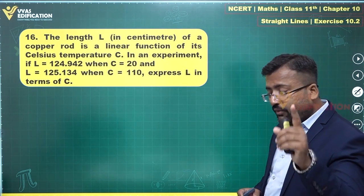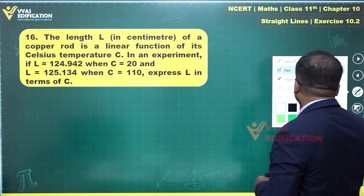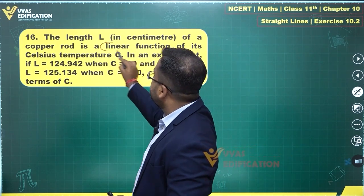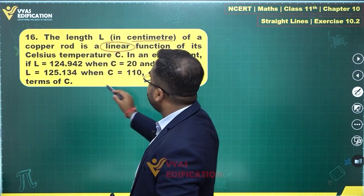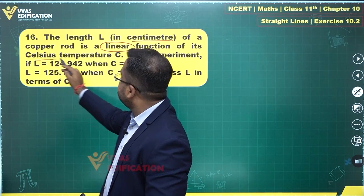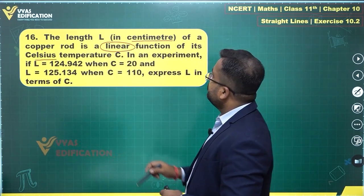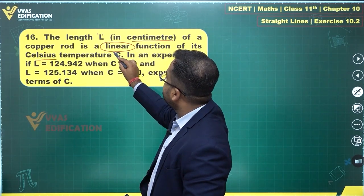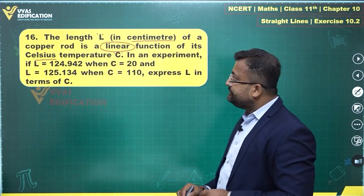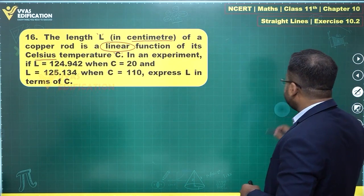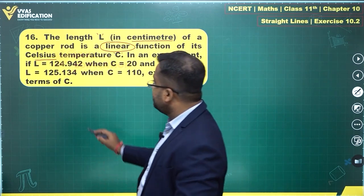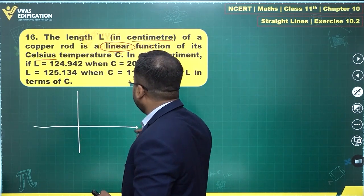It is given, mind you, it is given that it is a linear function. Since the person has said that this is a linear function, L is in centimeters and Celsius temperature C. So we are interested in L and C, a relation between L and C. And since the relation is linear, therefore what you will get is a linear function, that is a straight line.